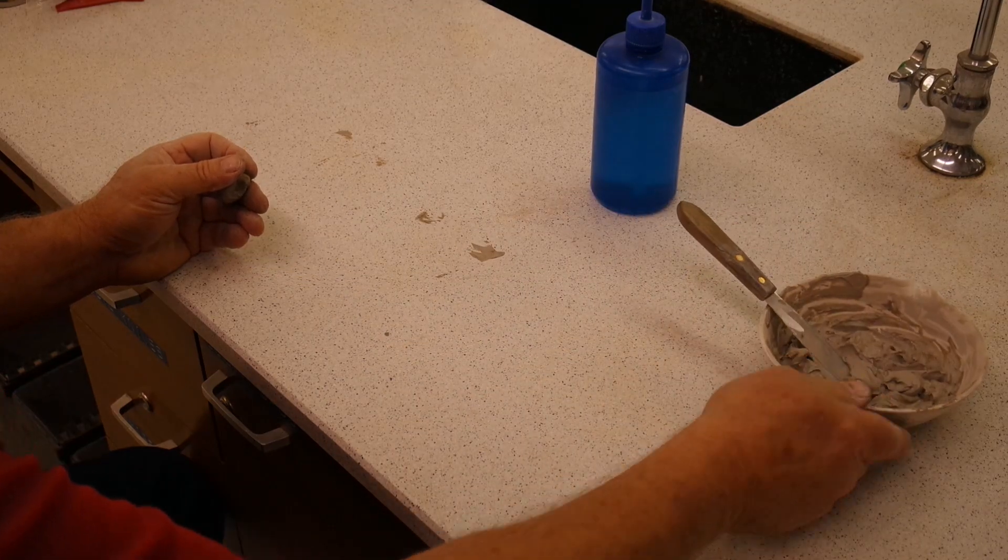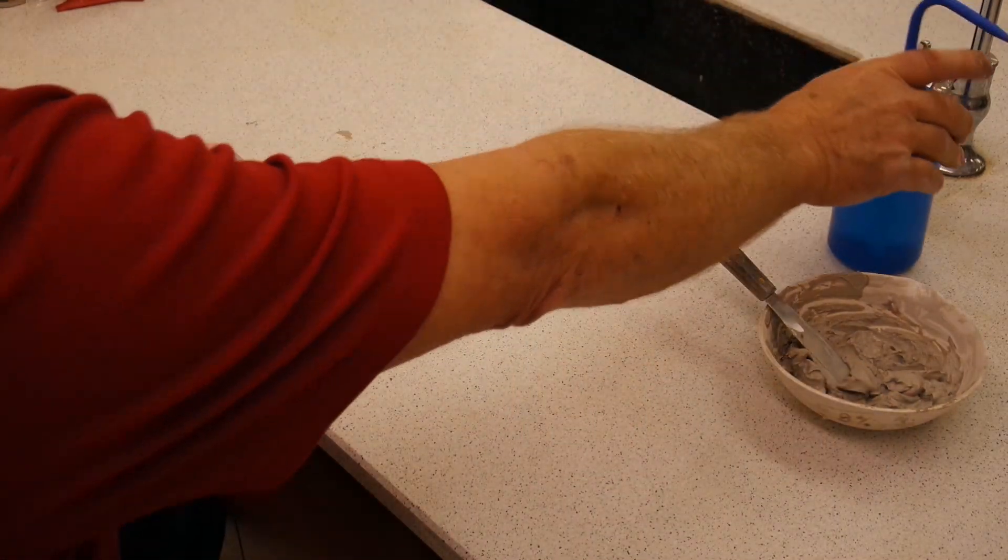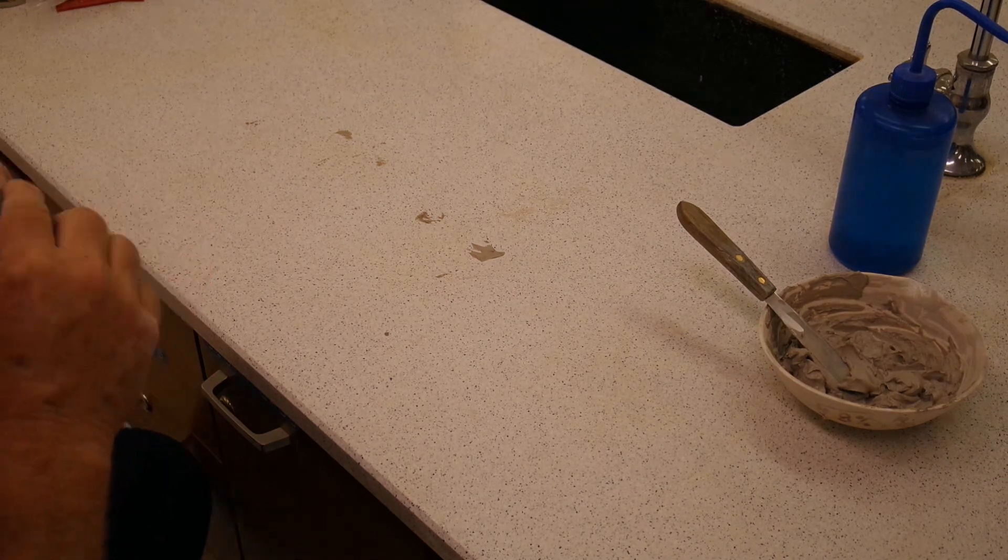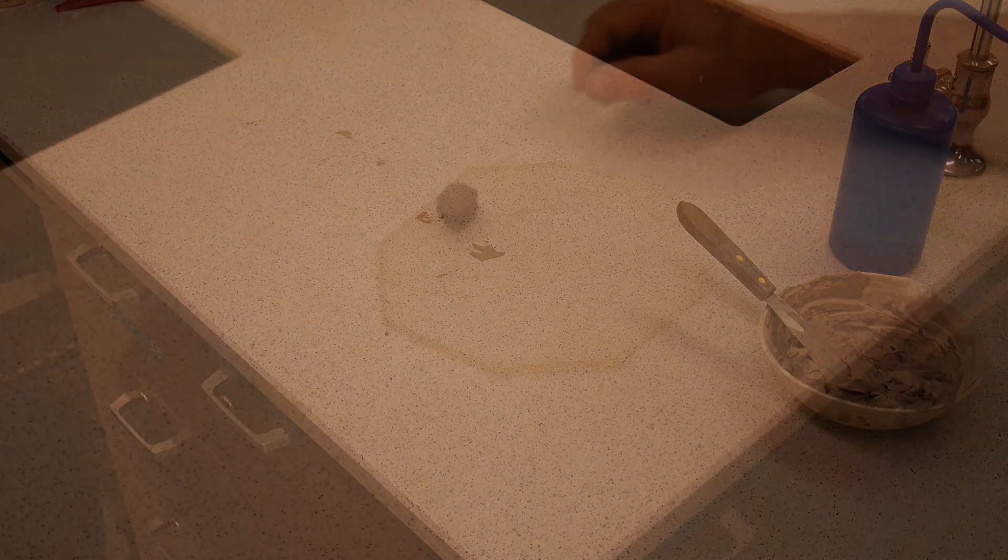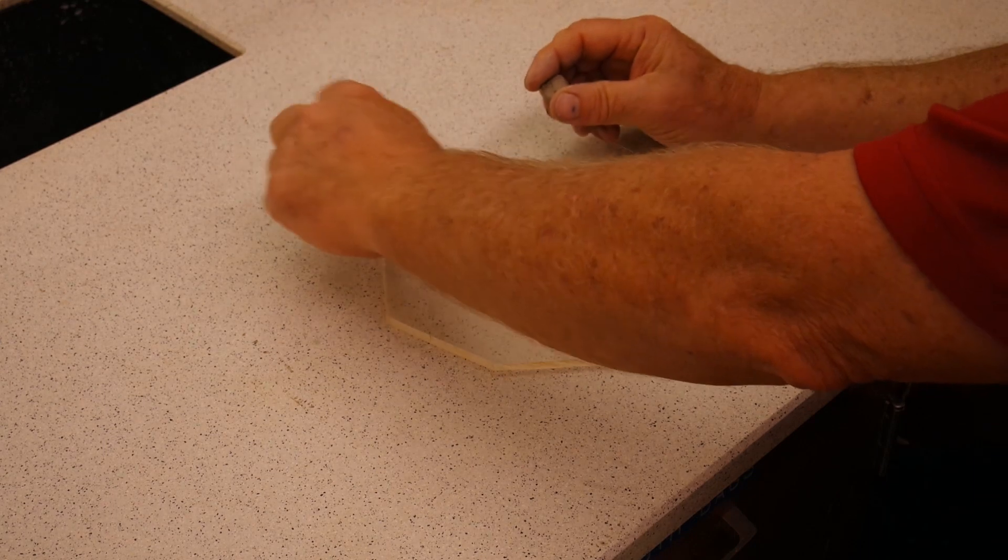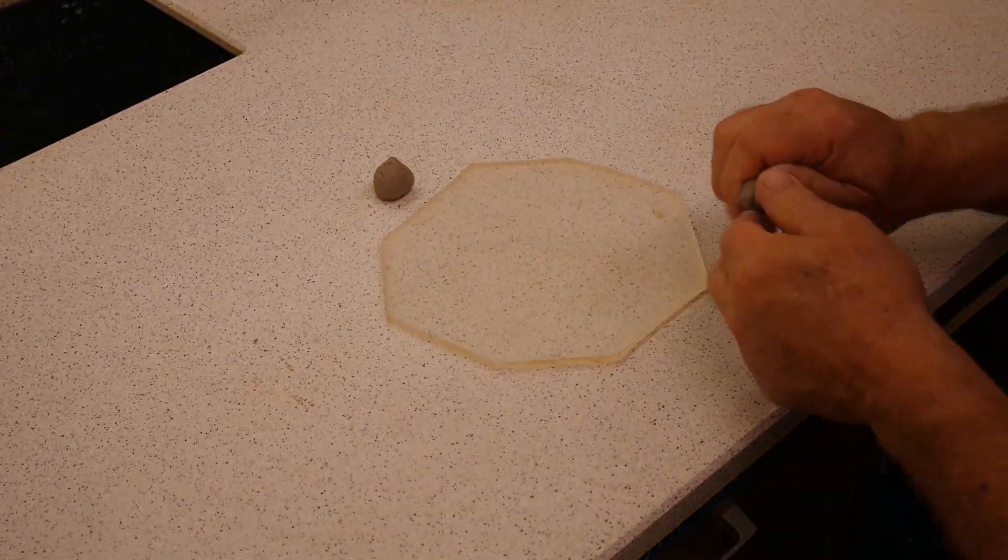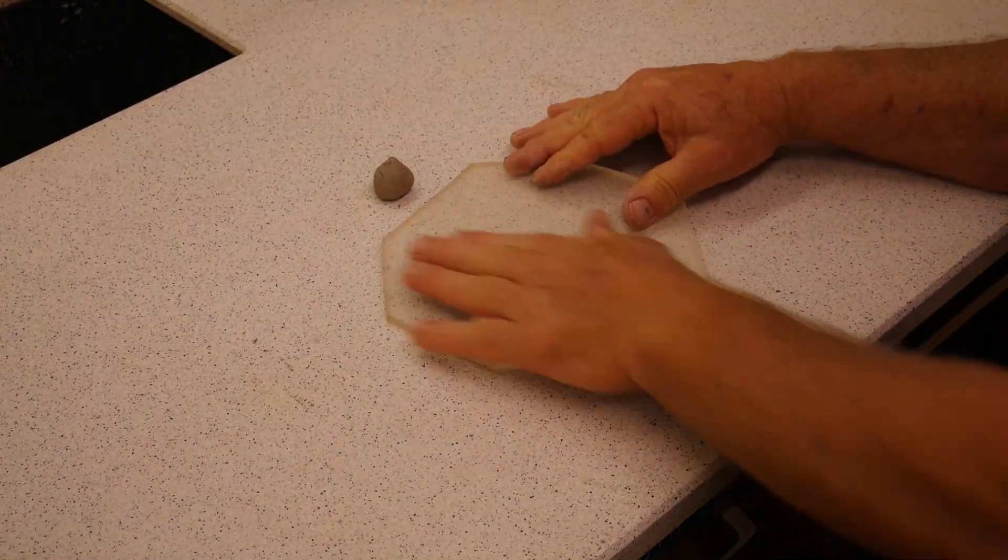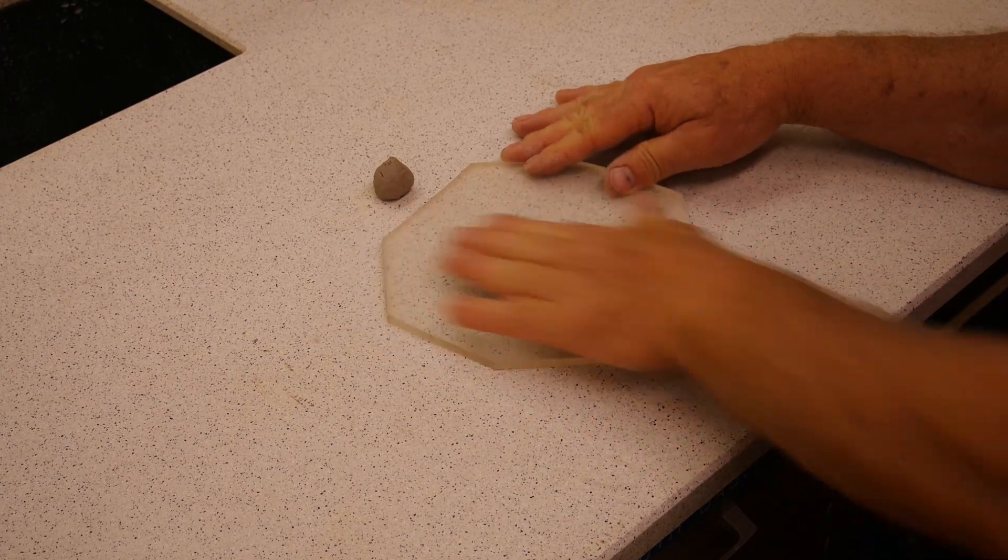Then we will roll out our plastic limit samples on a glass plate. This is done to draw the moisture out of the sample until it hits its plastic limit. We will continue to roll the sample out to an eighth of an inch diameter until we can no longer get to that point.